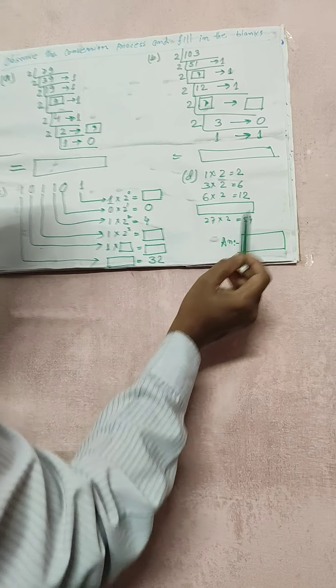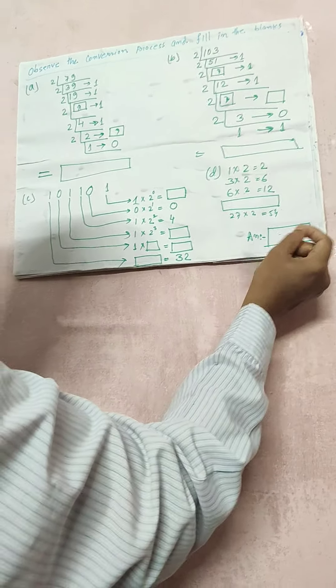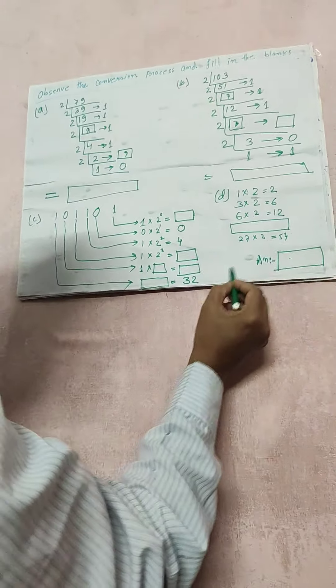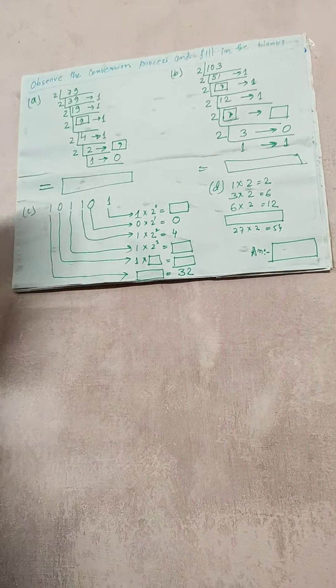At last, 27 into 2 equals 54. What answer will be coming after that? This is the answer. So you need to find this answer.